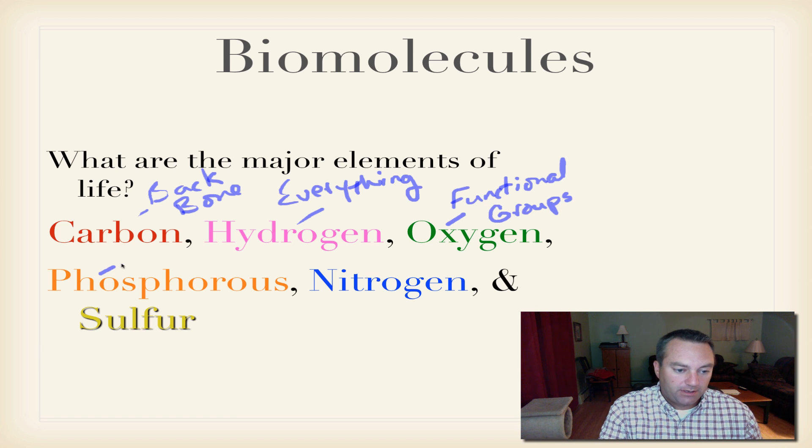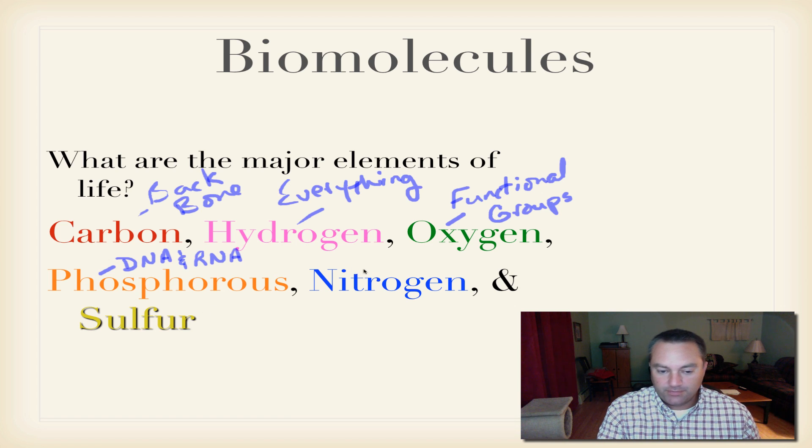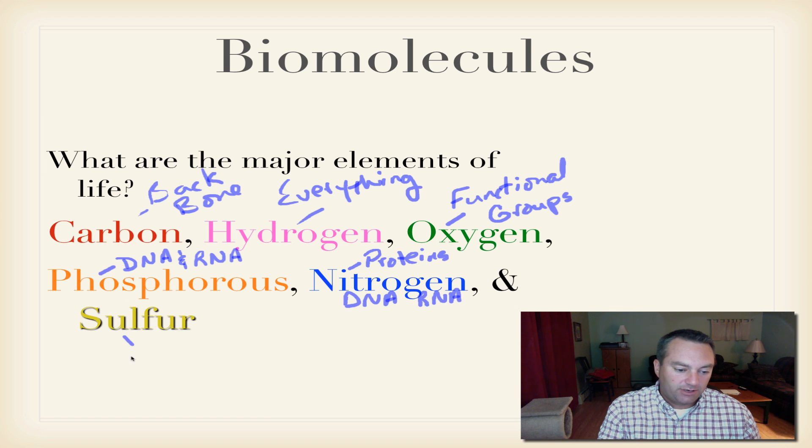Phosphorus. This is what you're going to find in DNA. You're also going to find it in RNA. And when we get to chapter 12, we'll get into more of the details on this one. Nitrogen is really, really important. You're going to find this guy in proteins. And you're also going to find it in the nucleic acids, such as DNA and RNA. And then sulfur. Sulfur is something else that you're going to find in proteins.